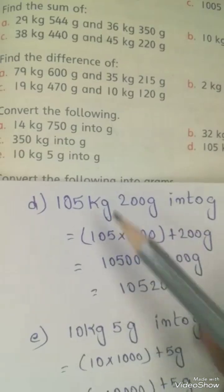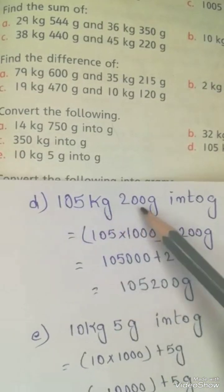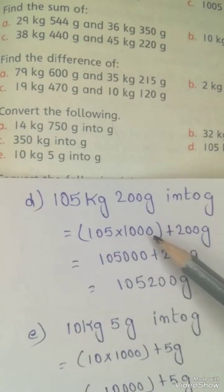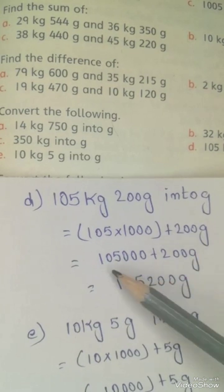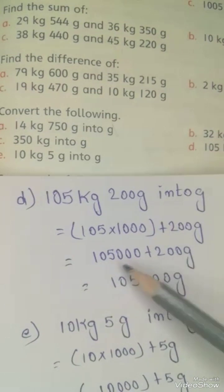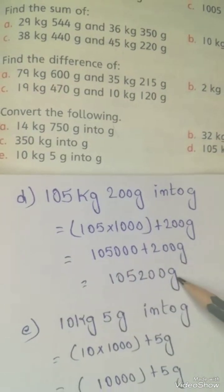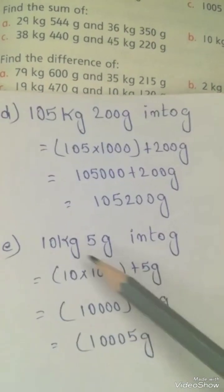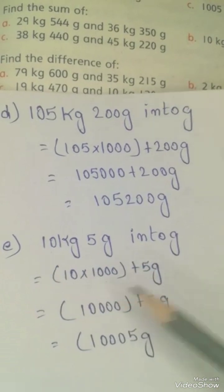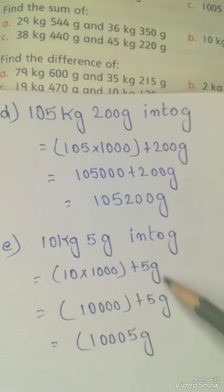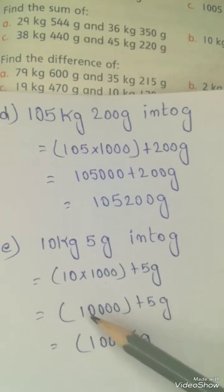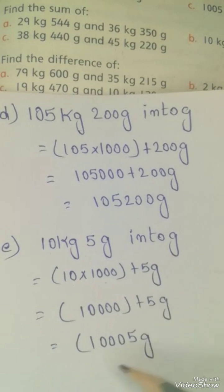Now question D: 105 kilograms 200 grams into grams. We multiply with 1000 and plus 200 grams, and the answer will come. The next question: 10 kilograms and 5 grams. We multiply with 1000 and plus 5 grams, and we will get this answer.